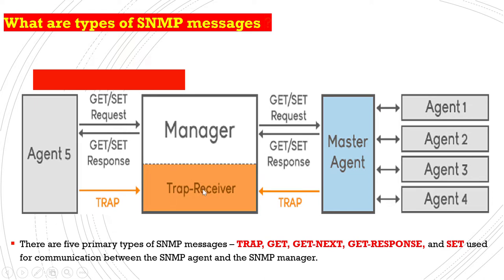Trap is a unidirectional message. Agent devices will directly send a trap message to the manager, and the manager does not send any request for a trap message. Whenever agents find any kind of fault on themselves, they send a trap message to the manager device.